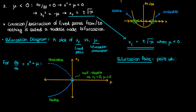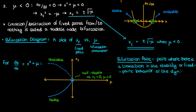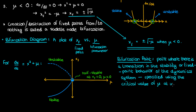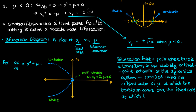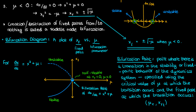The point where there is a transition in the stability or fixed point behavior of the dynamical system is called the bifurcation point. To specify it we need the critical parameter value μ_c at which the differential equation undergoes a change in dynamical behavior, and the fixed point x_ft at which this transition occurs. For the x² + μ system, the bifurcation point occurs at x_f = 0 when μ = 0.